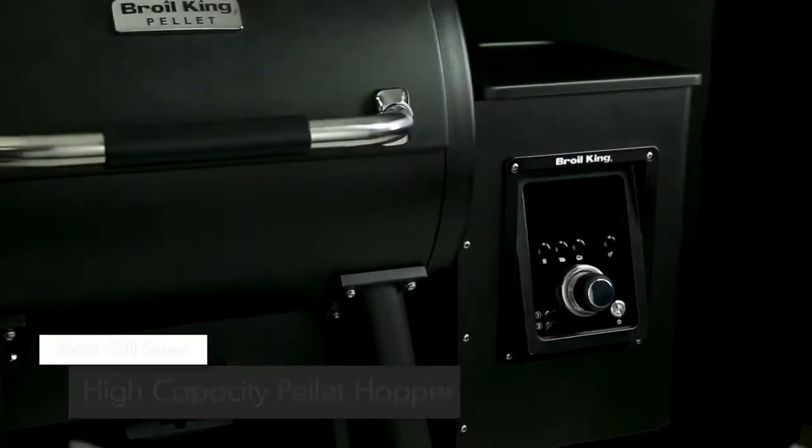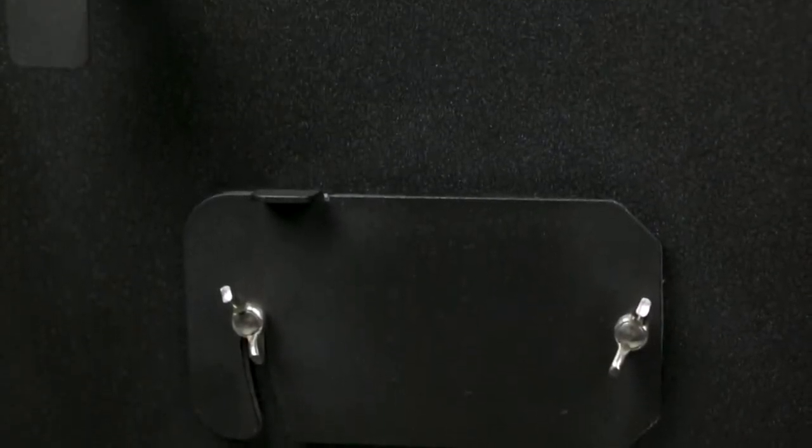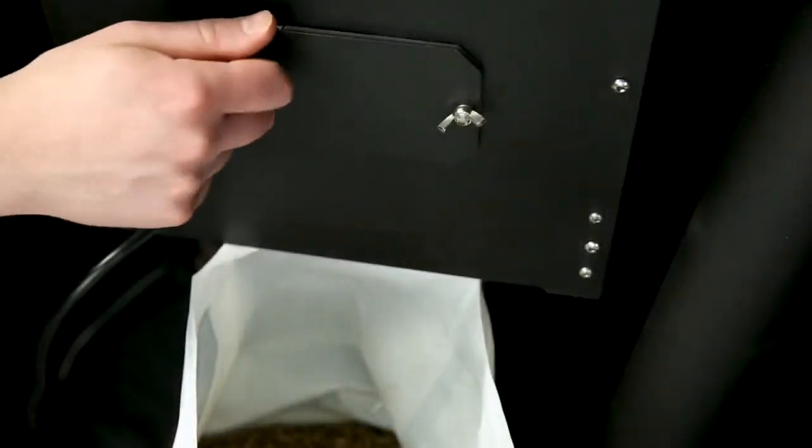The burn pot is fueled by a high-powered auger system, fed from the high-capacity 22-pound pellet hopper. At the base of the hopper, you'll find a pellet release hatch. Use it to change the pellet flavor in your grill, or remove all of the pellets before long periods of storage.